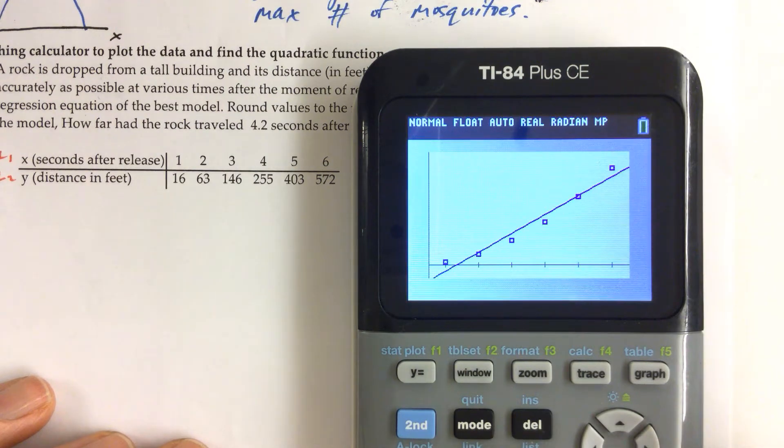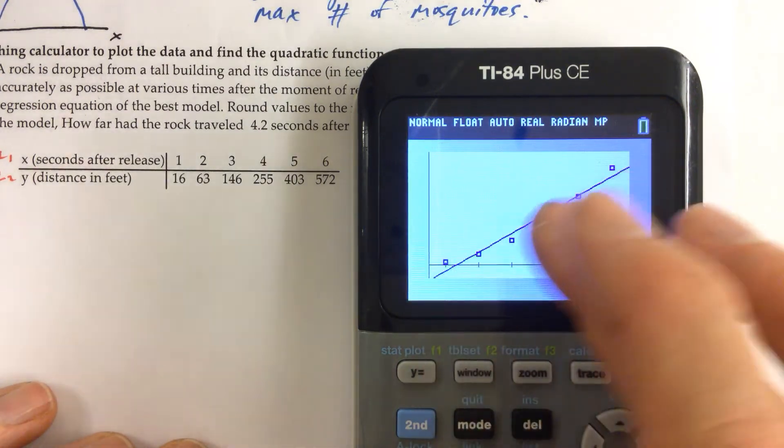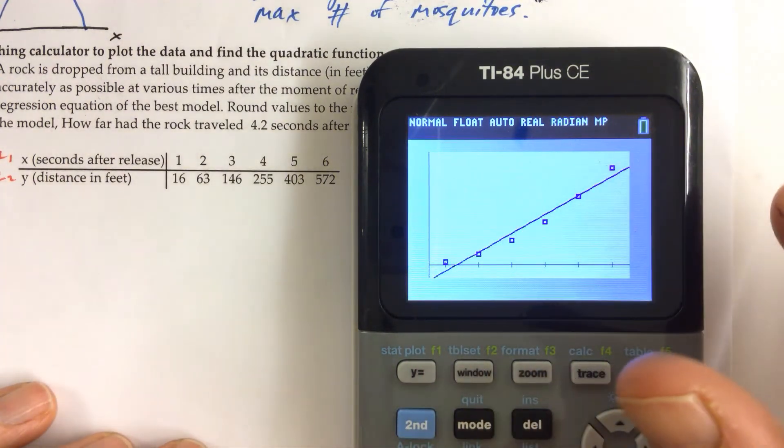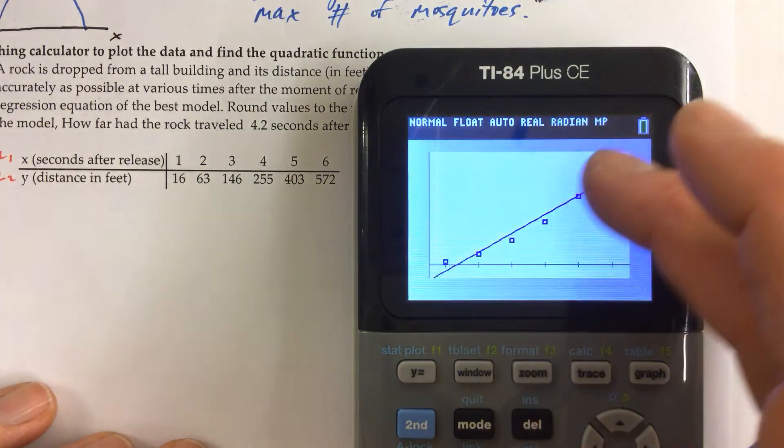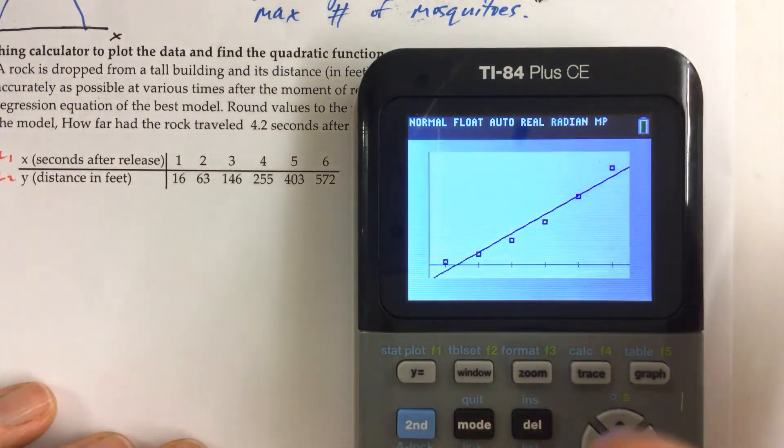But just understanding the rock is going to speed up as it's falling off that building, then the rate of change of the distance from where the rock was released is going to change. So it's going to have a little upward curve to it.